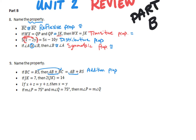The next one says if JK equals 7, then 2 times JK equals 14. From one step to the next they just multiplied both sides by 2, so that would be our multiplication property.